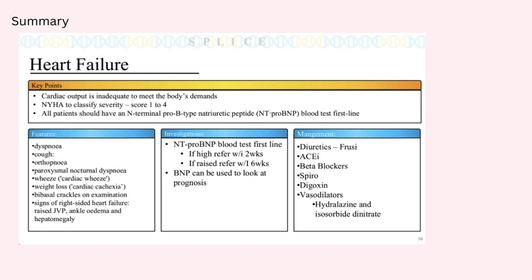Left ventricular heart failure and right ventricular heart failure may occur independently from one another, or they can also occur together, which is known as congestive cardiac failure or chronic cardiac failure. The other way of classifying heart failure is acute heart failure — essentially a new onset exacerbation — or chronic heart failure, which is usually a combination of both or a heart failure that is chronic in nature and has been progressing and getting worse over time.